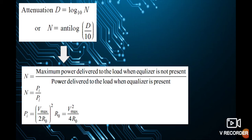N is denoted by the maximum power delivered to the load when the equalizer is not present, divided by the power delivered to the load when the equalizer is present. So N = Pi / PL. For maximum power transfer, the input power is given by Pi = (Vmax / 2R0)² · R0 = Vmax² / 4R0.